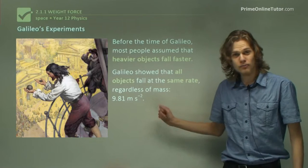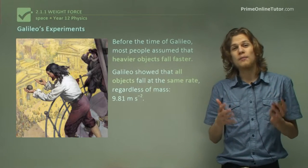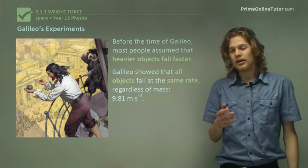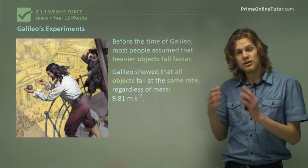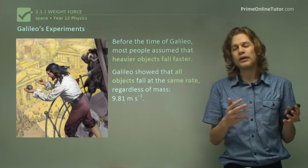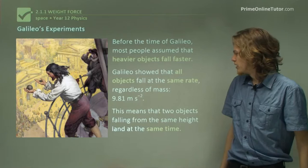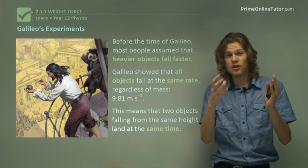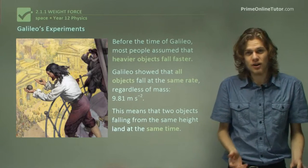However, Galileo, as pictured over here, showed that all the objects fall at the same rate regardless of how heavy they are. This rate happens to be 9.81 meters per second squared, which means that every second its velocity increases by 9.81 meters per second. So this means that if you drop two objects from the same height at the same time, it doesn't matter how heavy they are. They will land at the same time.